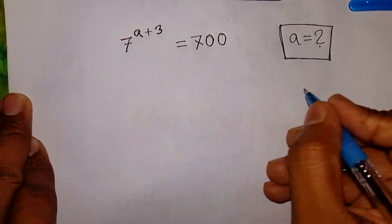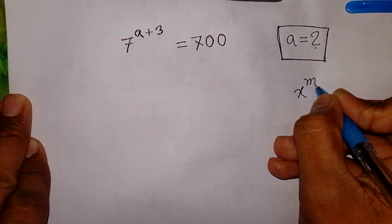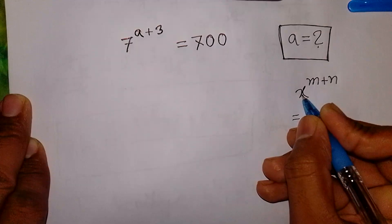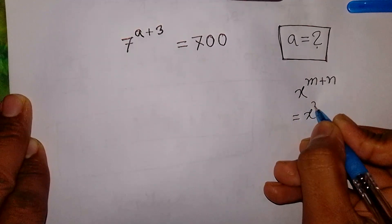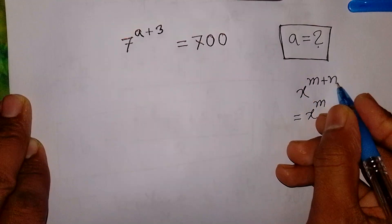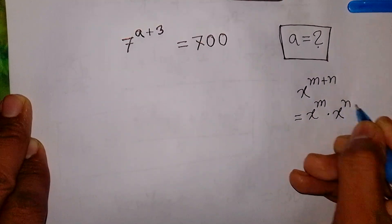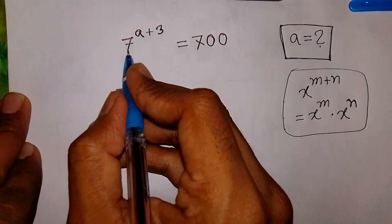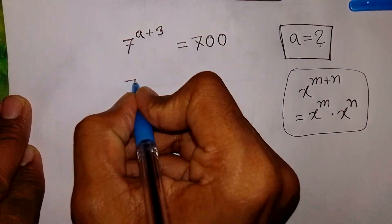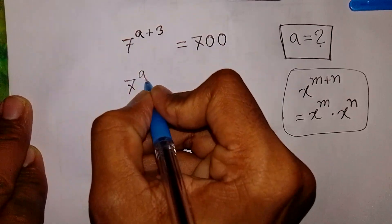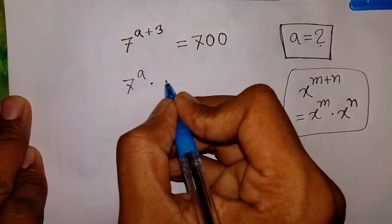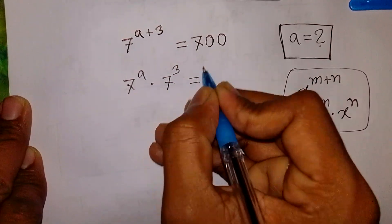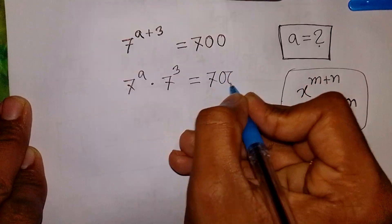First of all, we apply the exponential rule that x to the power of m plus n is equal to x to the power m times x to the power n. So, 7 to the power of a plus 3 is the same as 7 to the power a times 7 to the power 3, which equals 700.